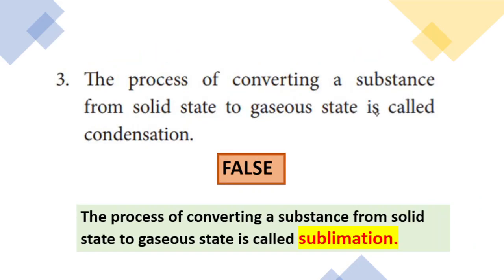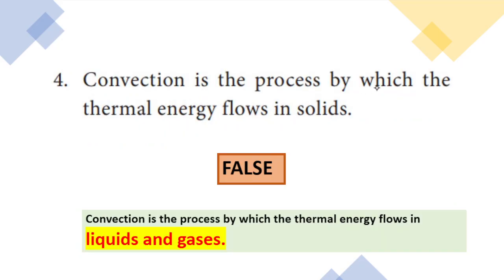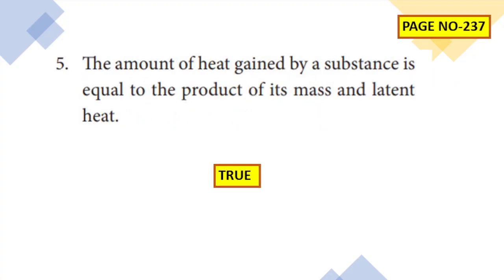The process of converting a substance from solid to gaseous state — if the solid changes to gas, it is called sublimation, not condensation. So that statement is false; the correct answer is sublimation. Convection is the process by which thermal energy flows in solids — this is false; conduction is for solids, convection is for liquids and gases. The amount of heat gained by a substance equals the product of its mass and latent heat — this is true.